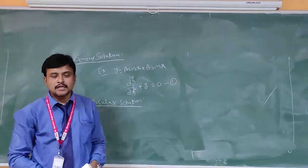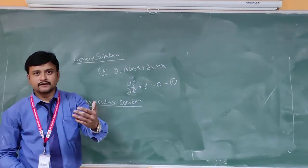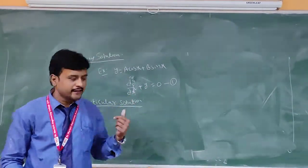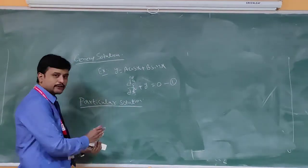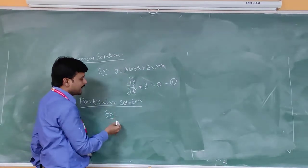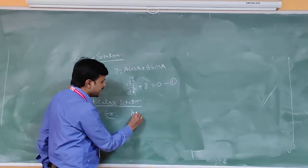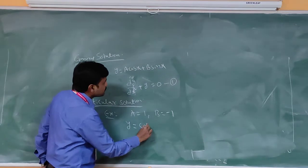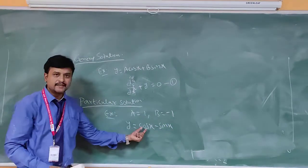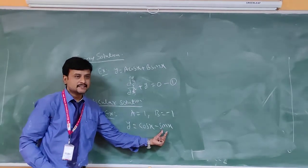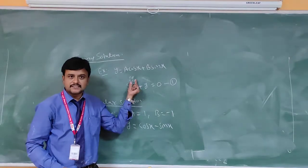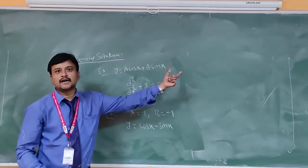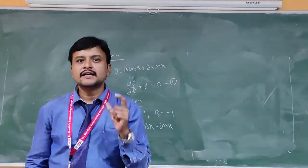Now particular solution: we can obtain a particular solution by giving specific values to the arbitrary constants in the general solution. For example, taking the same equation, if we set a = 1 and b = -1, then the solution becomes y = cos x - sin x. So y = cos x - sin x is the particular solution of the differential equation d²y/dx² + y = 0.